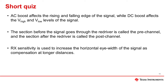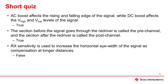And now for a short quiz. Please take a moment to pause the presentation and see if you can answer these yourself. Question 1: AC boost affects the rising and falling edge of the signal while DC boost affects the V-high and V-low levels of the signal. This is true. Question 2: The section before the signal goes through the re-driver is called the pre-channel and the section after is called the post-channel. This is also true. Question 3: RX sensitivity is used to increase the horizontal eye width of the signal as compensation at longer distances. This is false — RX sensitivity is used to increase the vertical eye width of the signal.